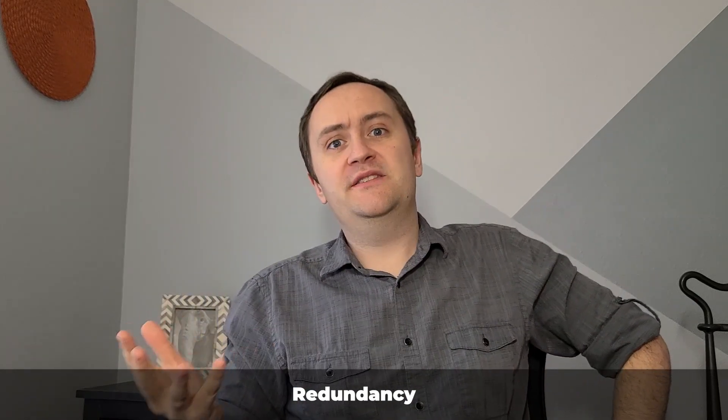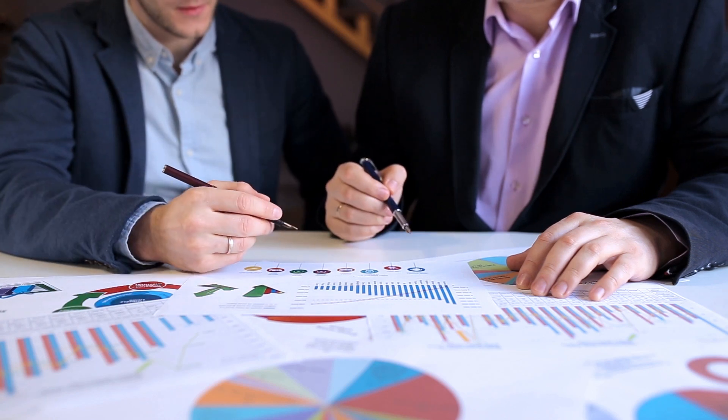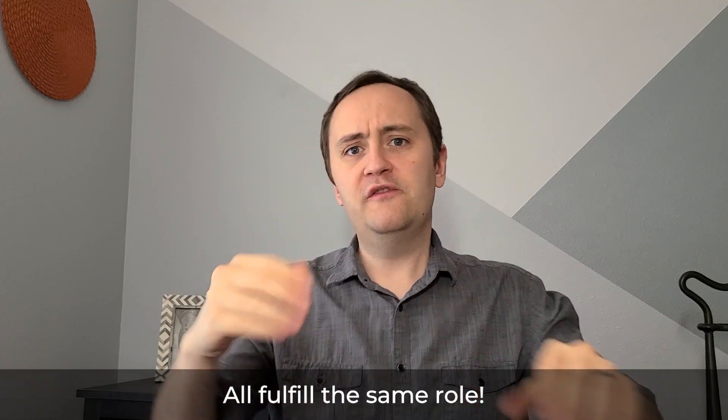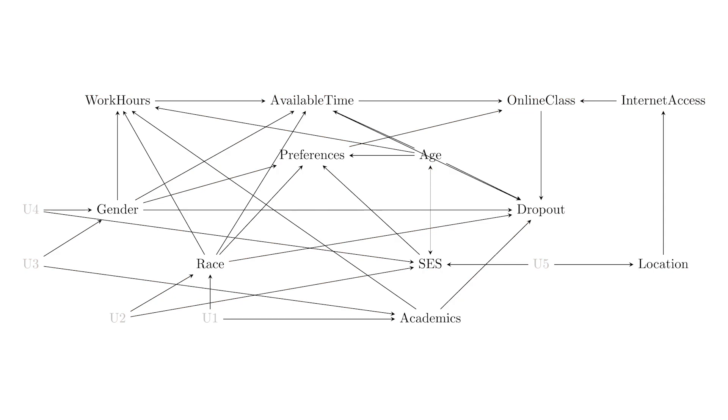The second way to simplify a causal diagram is to think about redundancy. Remember, the reason we're making this causal diagram is to identify our effect of interest — to answer a research question. From the point of view of our research question, some things are just redundant. If you have a set of variables for which the arrows in and out all go to the same places, then from the point of view of your research question those variables all fulfill the same role.